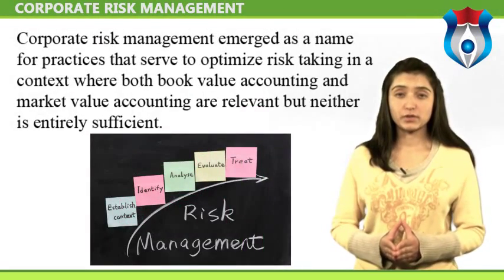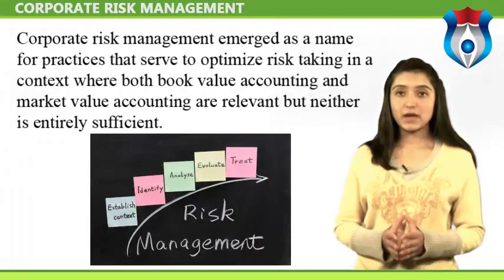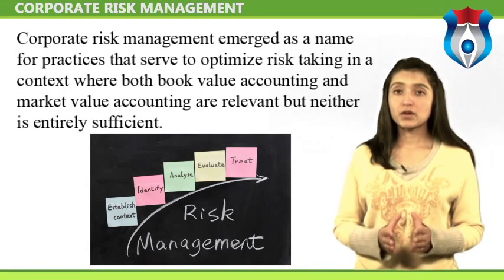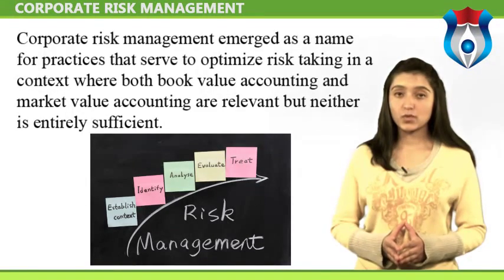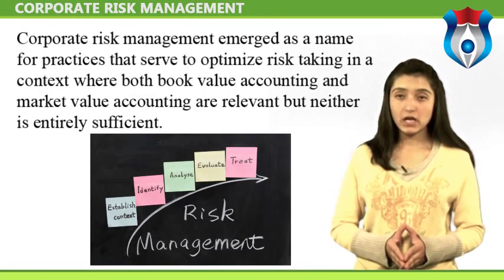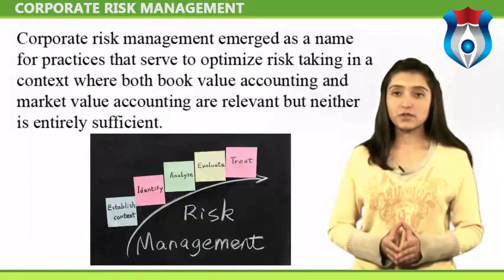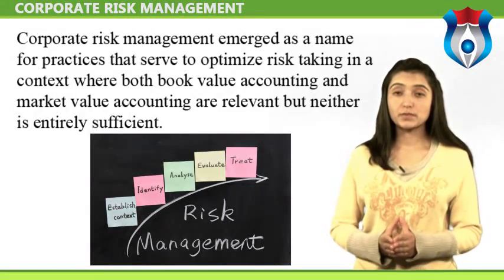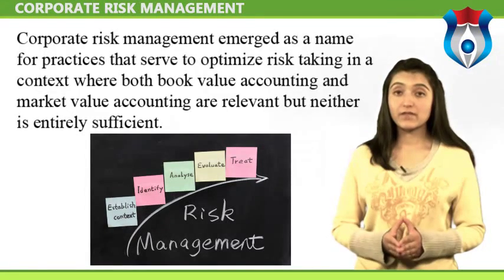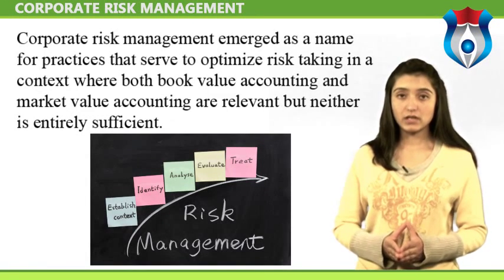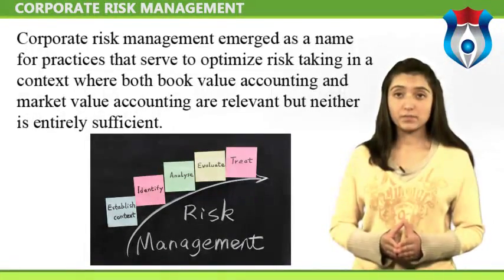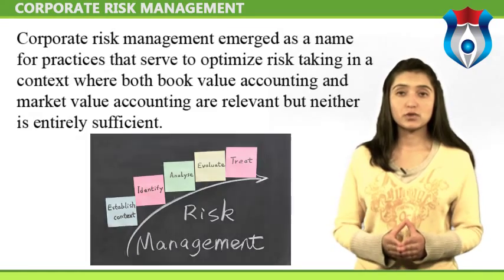Types of Risk Managing Firms: corporate risk management emerged as a name for practices that serve to optimize risk taking in a context where both book value accounting and market value accounting are relevant, but neither is entirely sufficient. An example would be a utility that owns power plants suitably valued using book value accounting, that generate electricity sold on the spot market where market value accounting is more applicable. Financial risks came to be divided into three categories.